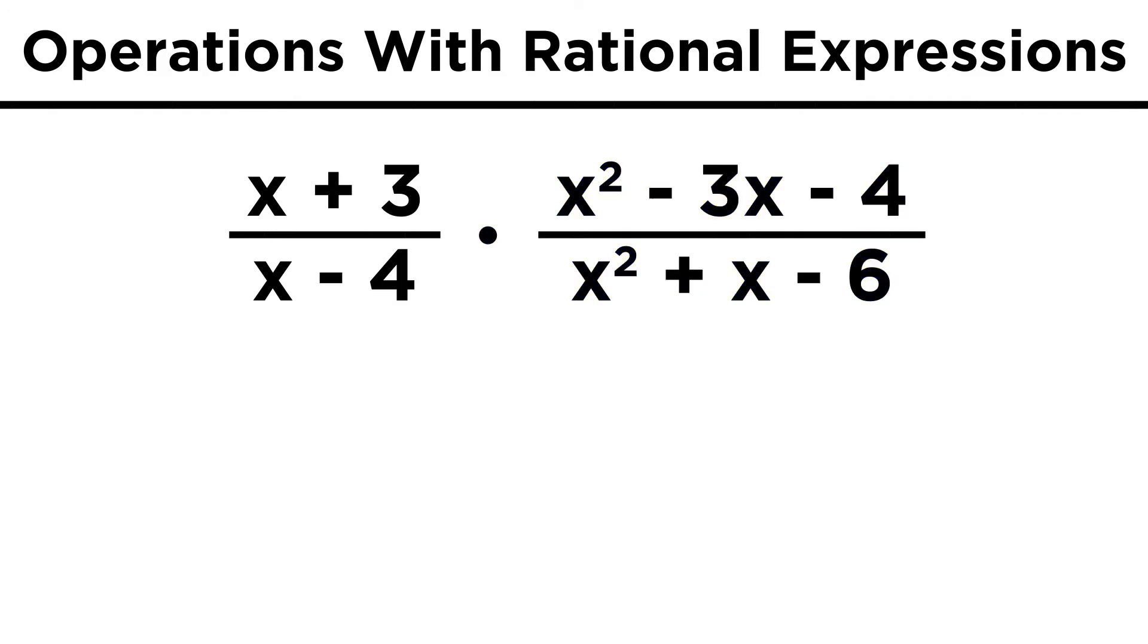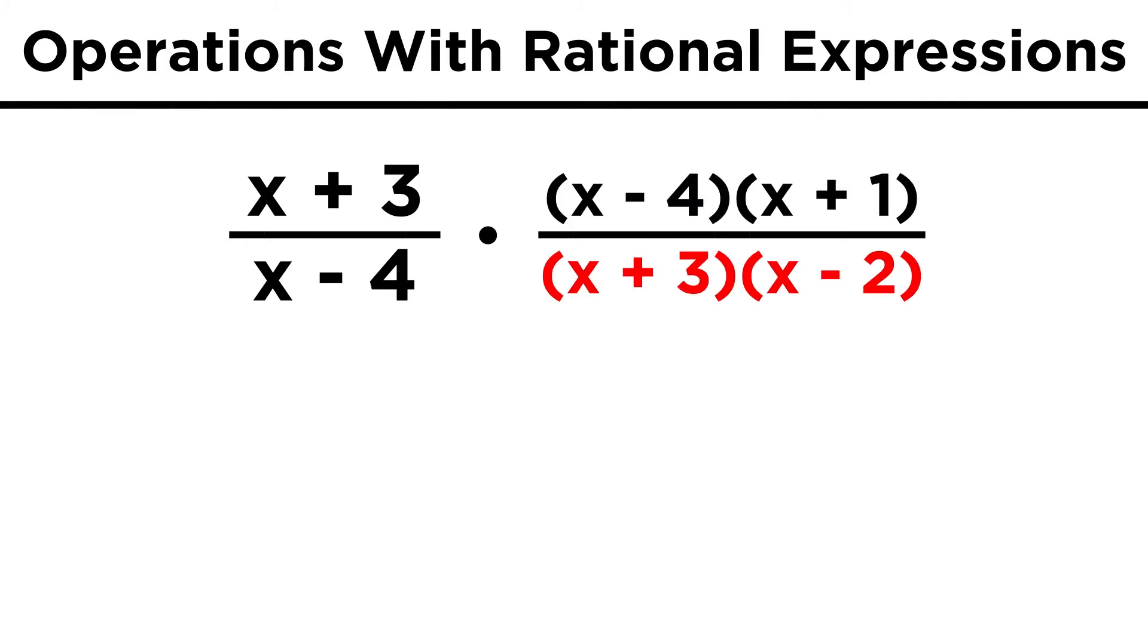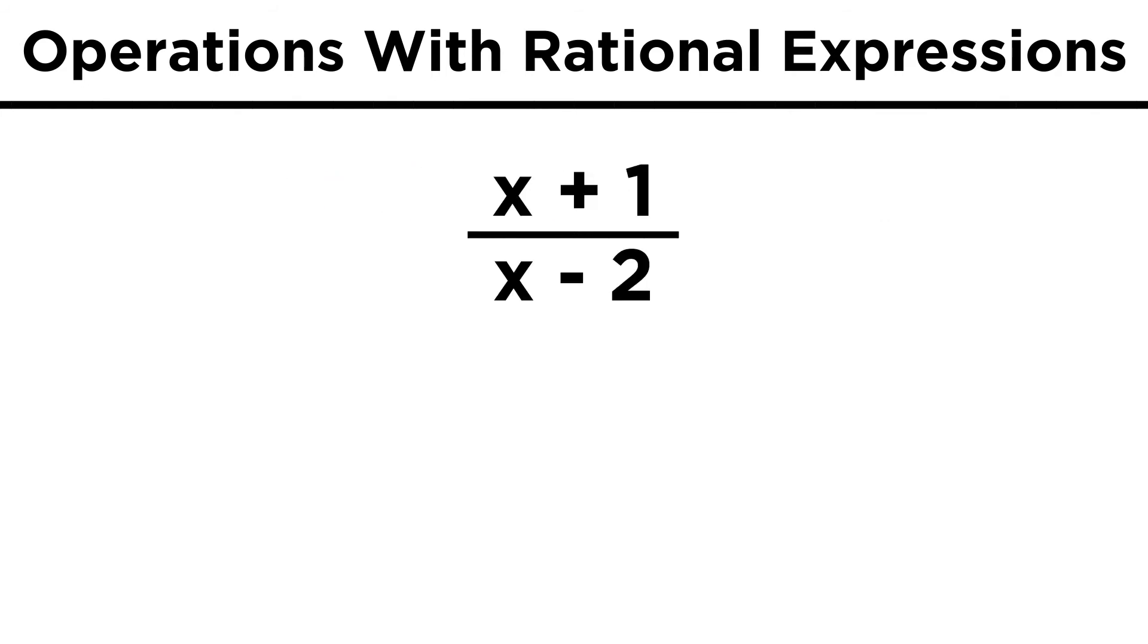Of course we first have to factor, so up top we get x minus four times x plus one, and on the bottom we get x plus three times x minus two. A number of terms will therefore cancel, and we are left with this as our answer.